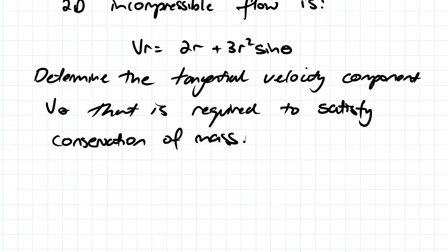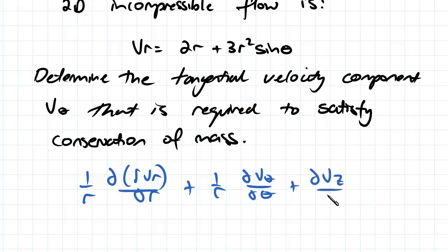So our continuity equation in polar coordinates, as was derived in the last video, is 1 over r d of rvr dr plus 1 over r dv theta d theta plus dvz dz equal to 0.